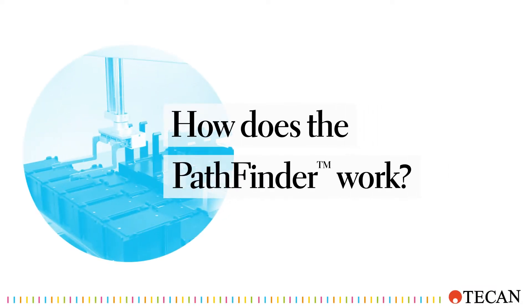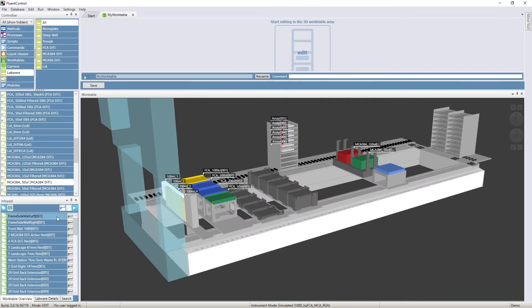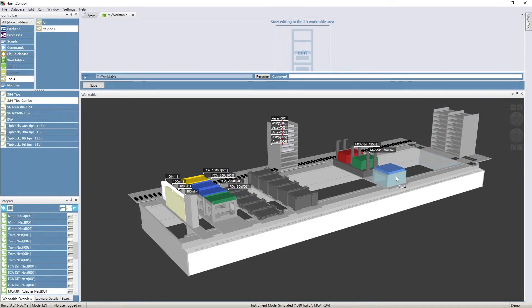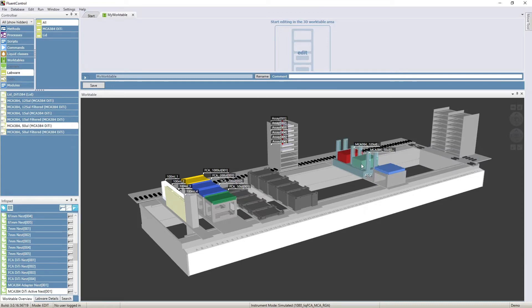So how does Pathfinder actually work? Any object such as the instrument frame, arms, work table, carriers, labware, and even tools such as the robotic gripper arm fingers have a so-called bounding box.